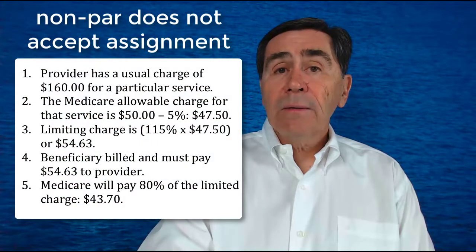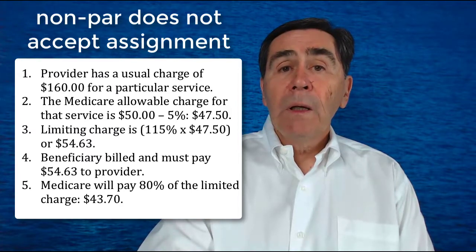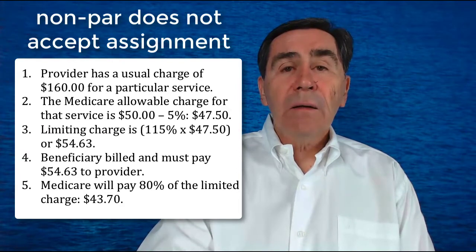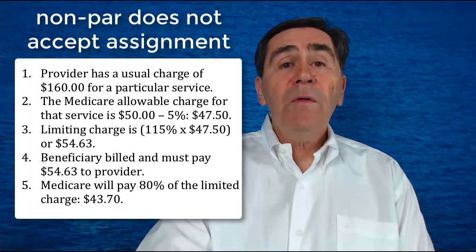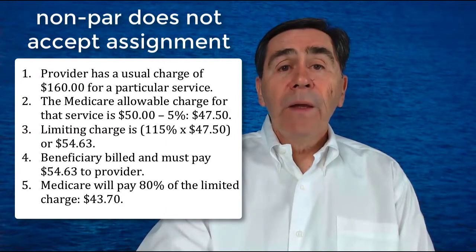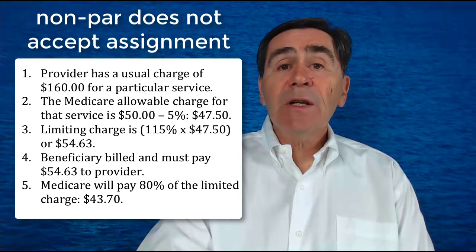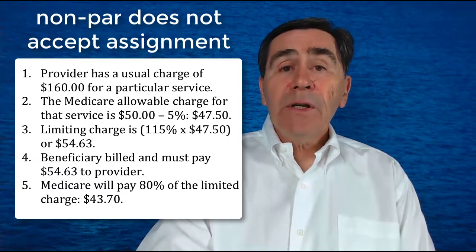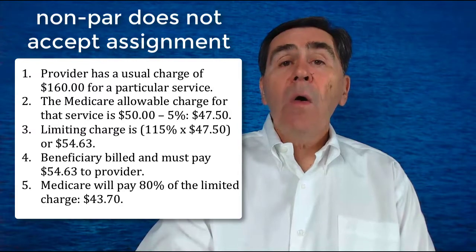Now, let's extend this to a non-participating provider who decides not to accept assignment. The provider has a usual charge of $160 for a particular service. Again, the Medicare allowable charge for that service is $50 minus the 5%, or $47.50. But the limiting charge is 115%, so the limiting charge is 115% times $47.50, or $54.63. The beneficiary can be billed at that point and must pay the provider $54.63. The beneficiary can then send the bill to Medicare, and Medicare will reimburse the beneficiary 80% of the limited charge, or $43.70.